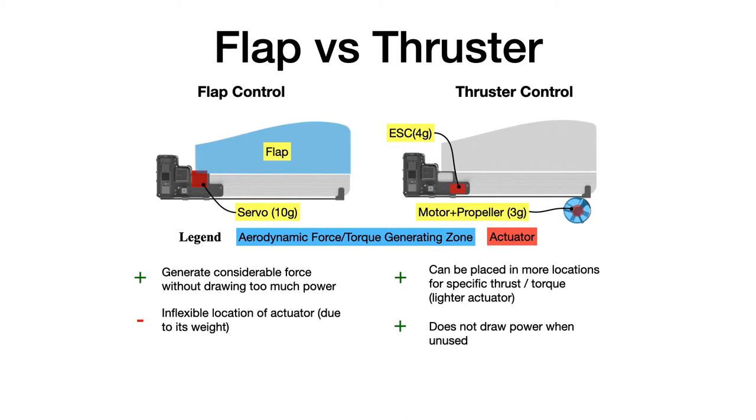As for the drawbacks, the actuator of the flap must be only placed near the seat due to the CG requirements. And it draws power to hold its angle even when it is not actuating. As for the thruster, it might consume more power when intensively used.